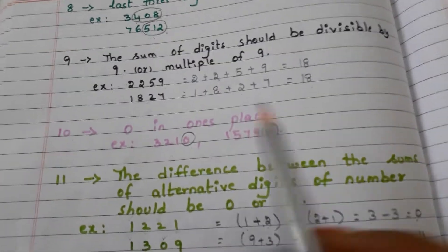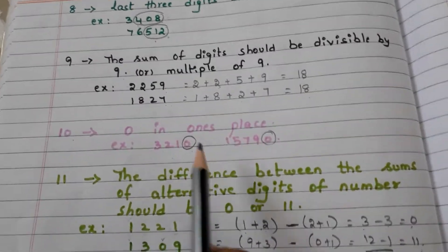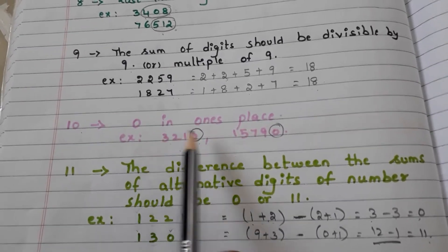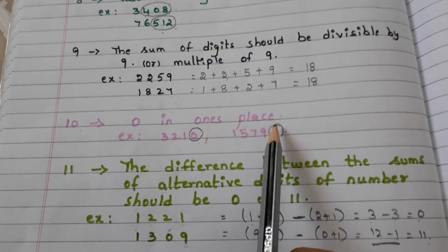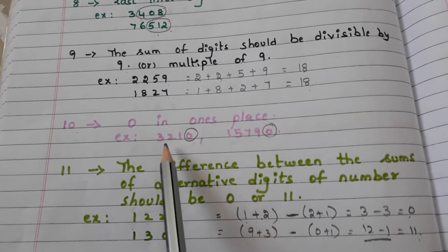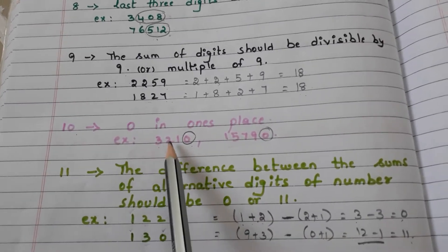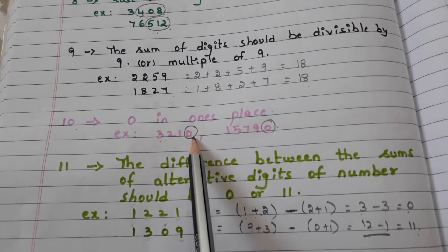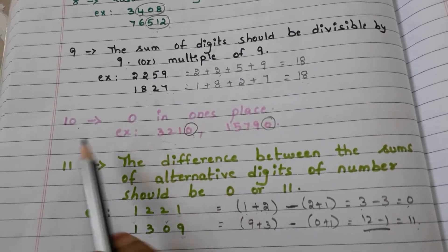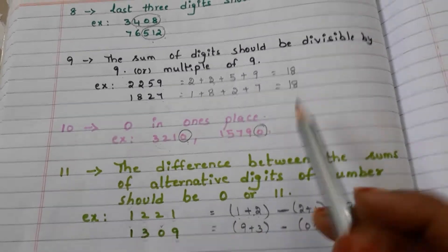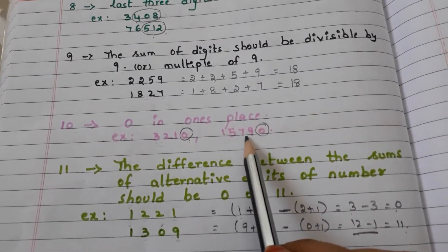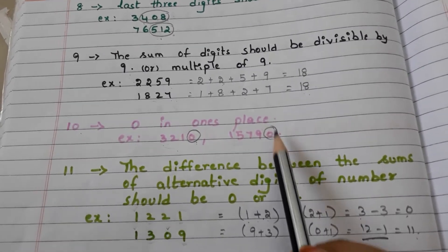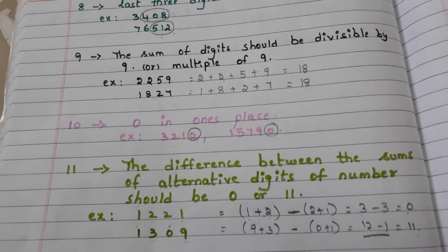Now, 10. A number is divisible by 10 if 0 is in the ones place. For example, 3210 — 0 is in the ones place, so the entire number is divisible by 10. In the number 15790, 0 is in the ones place, so the entire number is divisible by 10.